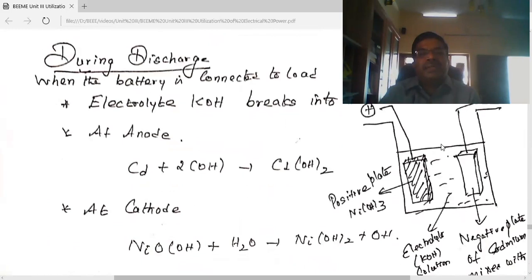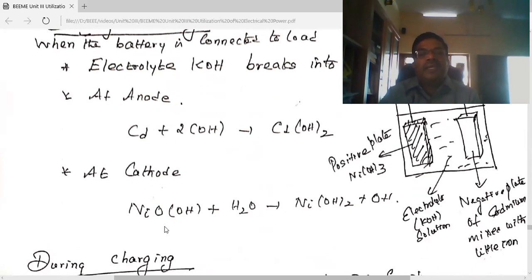When we charge, at anode: cadmium plus 2OH gives Cd(OH)2. At cathode: Ni(OH)2 plus OH gives NiO(OH).